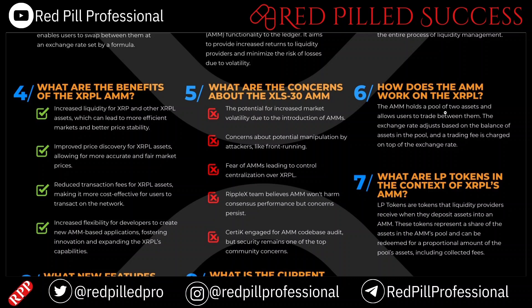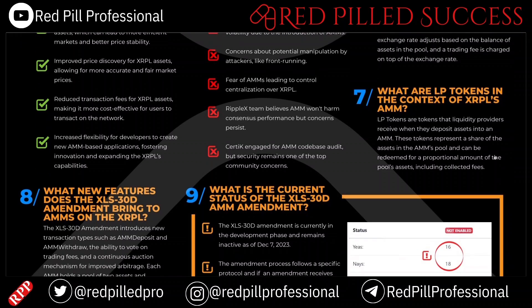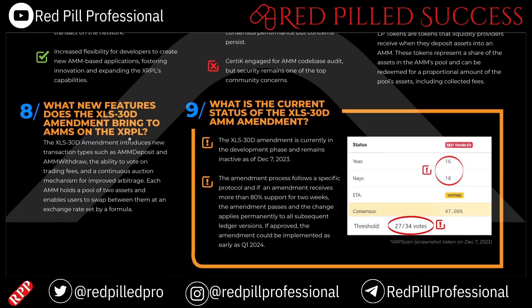How does the AMM work on the XRPL? The AMM holds a pool of two assets and allows users to trade between them. The exchange rate adjusts based on the balance of assets in the pool, and a trading fee is charged on top of the exchange rate. LP tokens are tokens that liquidity providers receive when they deposit assets into an AMM. These tokens represent a share of the pool's assets and can be redeemed for a proportional amount, including collected fees.